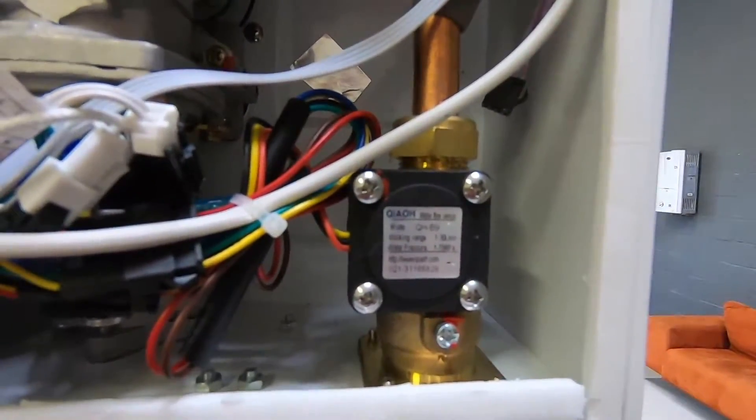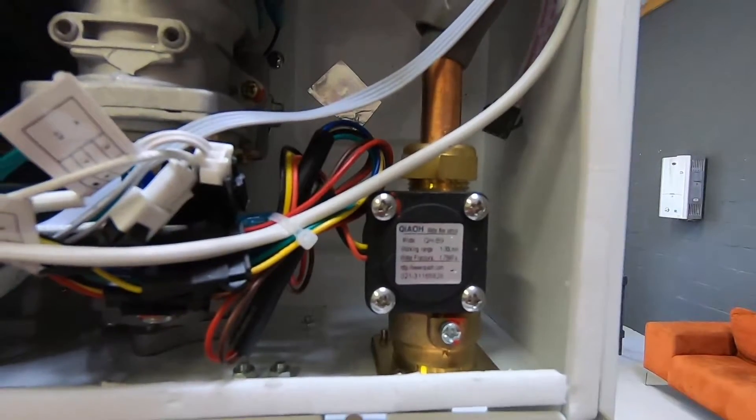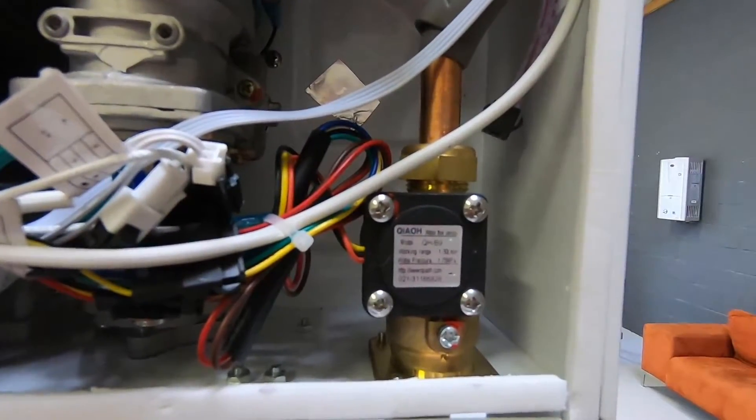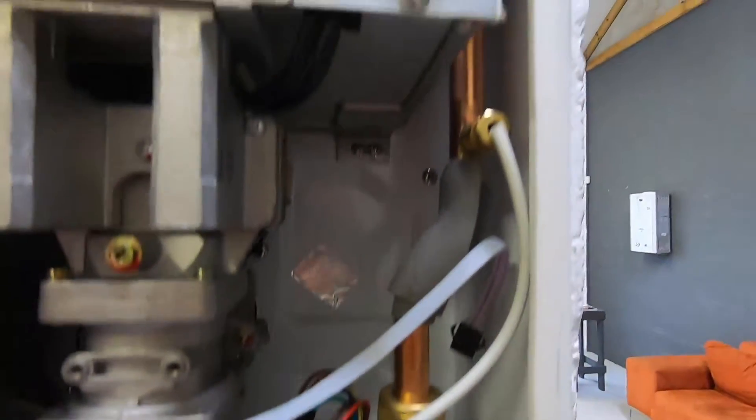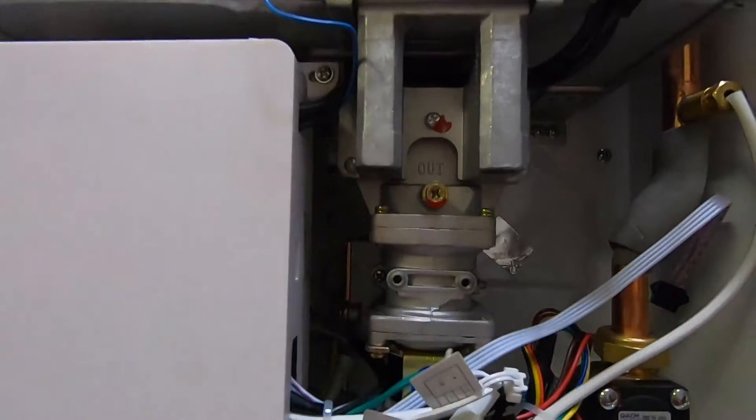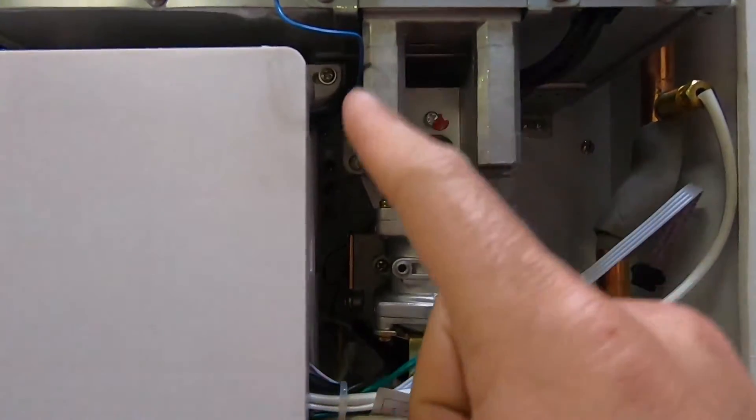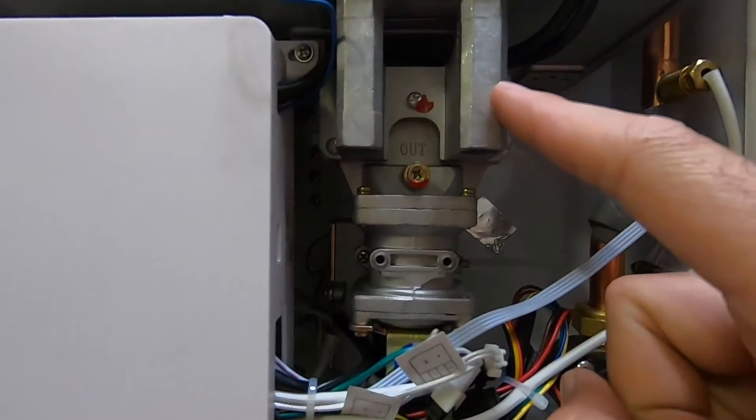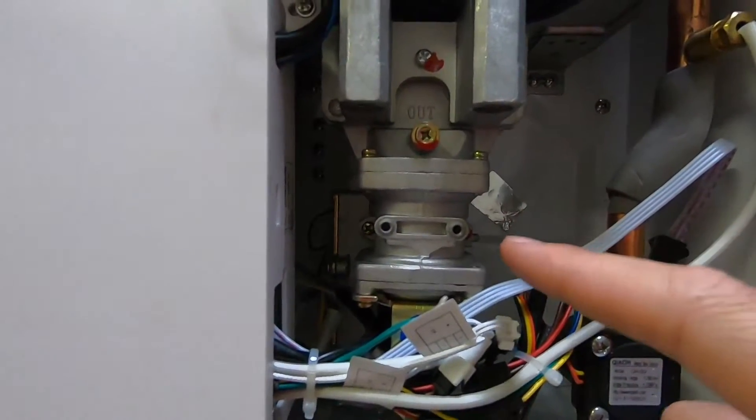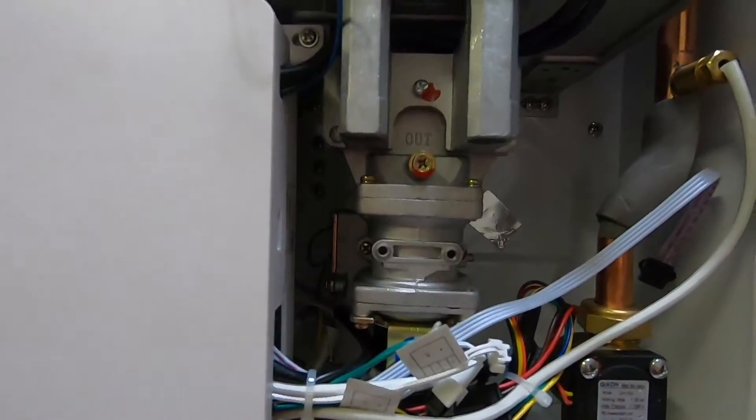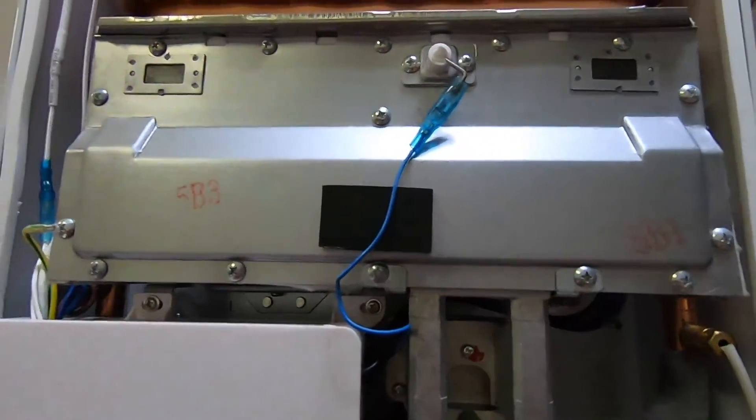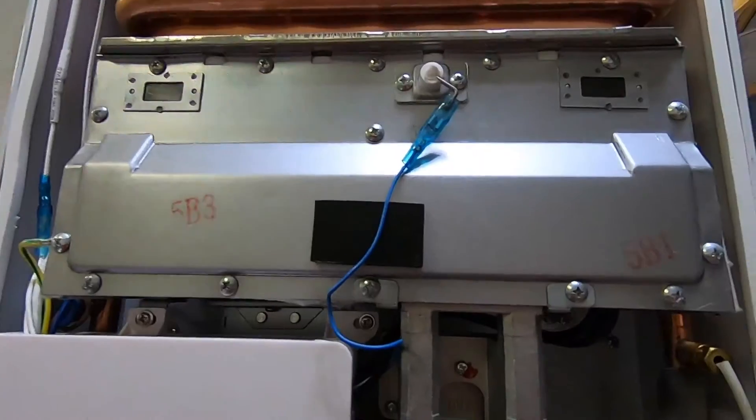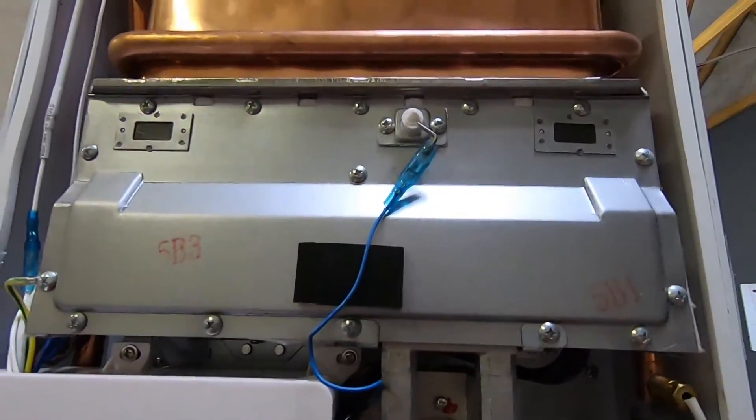The flow sensor registers how much water is traveling through the geyser per minute. It then uses the inlet temperature sensor and the outlet temperature sensor to determine how much gas is required to go to the burners via the gas proportional valve located here. The gas proportional valve then opens or closes the necessary solenoids in order to send the correct amount of gas to the burners to achieve the optimum temperature that you desire.